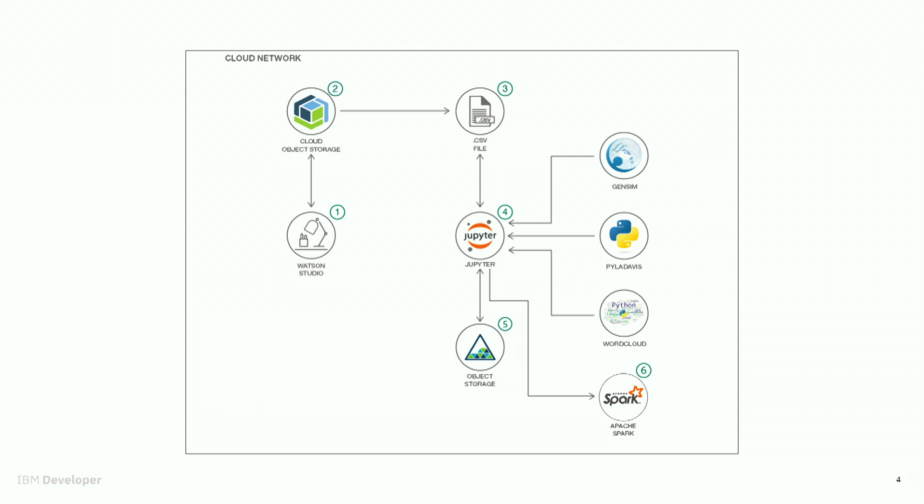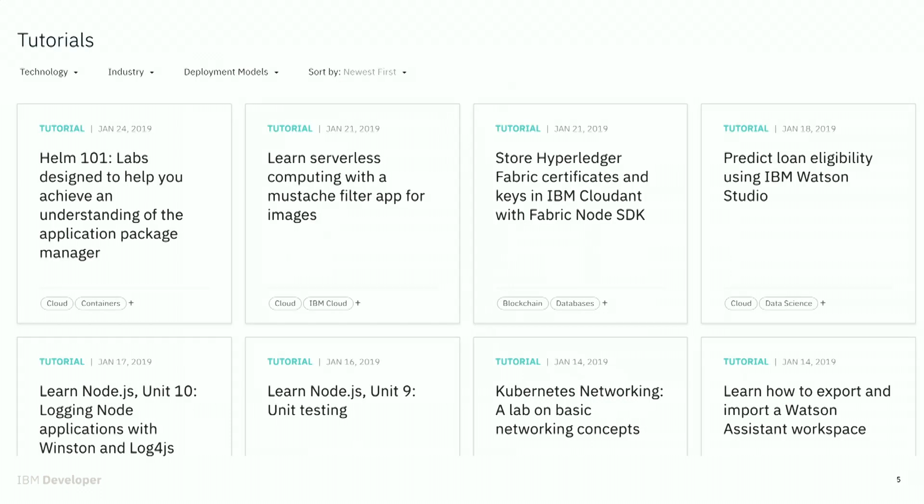Here you can see a picture of an architecture diagram — it has multiple components, and some of these components are open source. I'll talk about open source at the end as well. Next is Content.